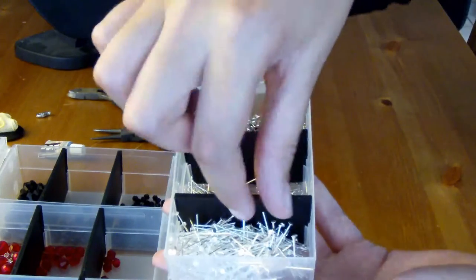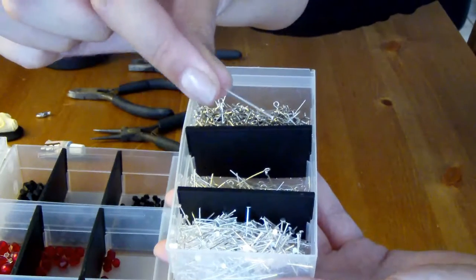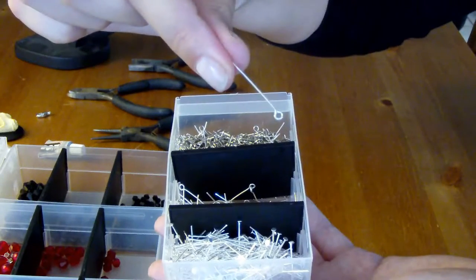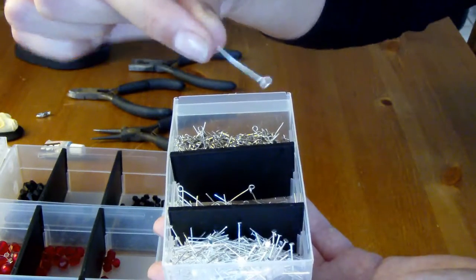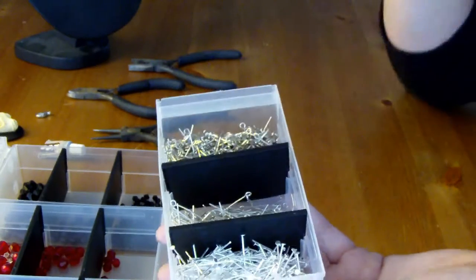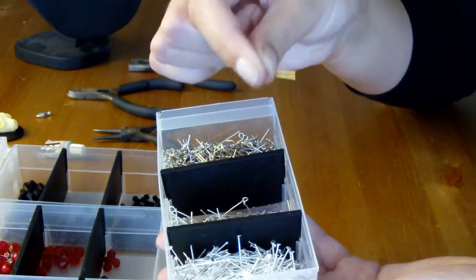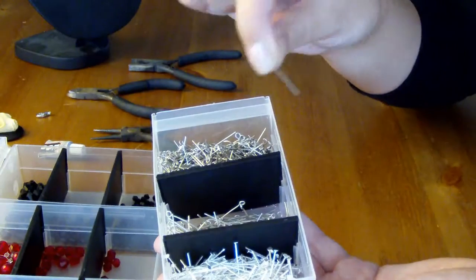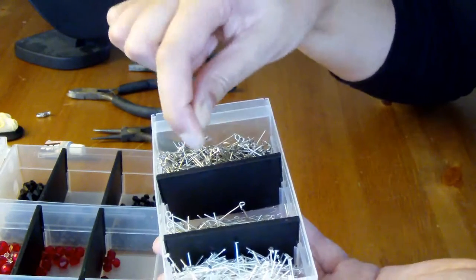You will also need pins. So you have flat head pins and you have eye pins, I believe these are called. So you have a loop on one side. So I have one size of the flat head pins and two sizes of the eye pins. And this is the smallest size and this is just perfect. You put one bead on and then close it again. So these are really tiny.